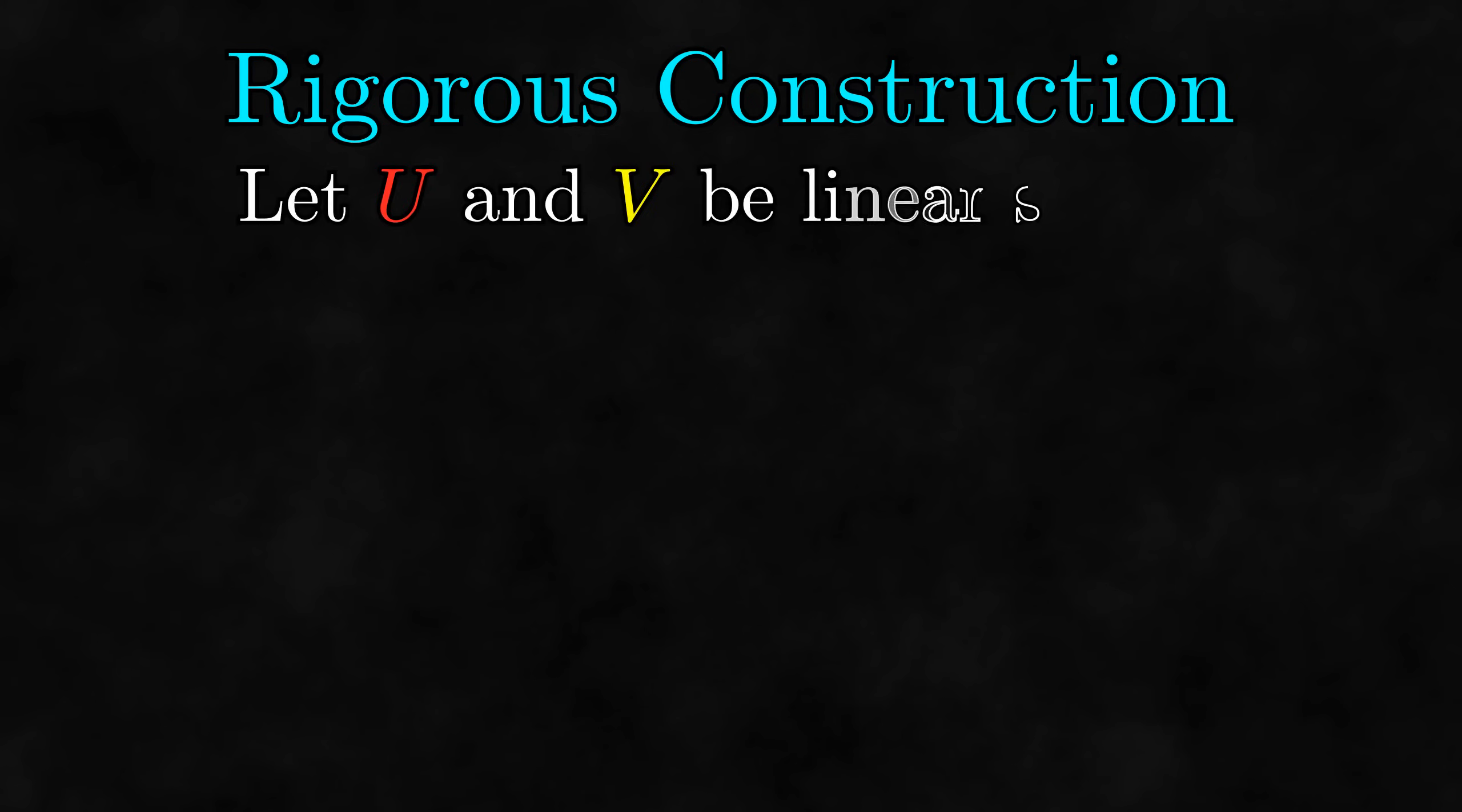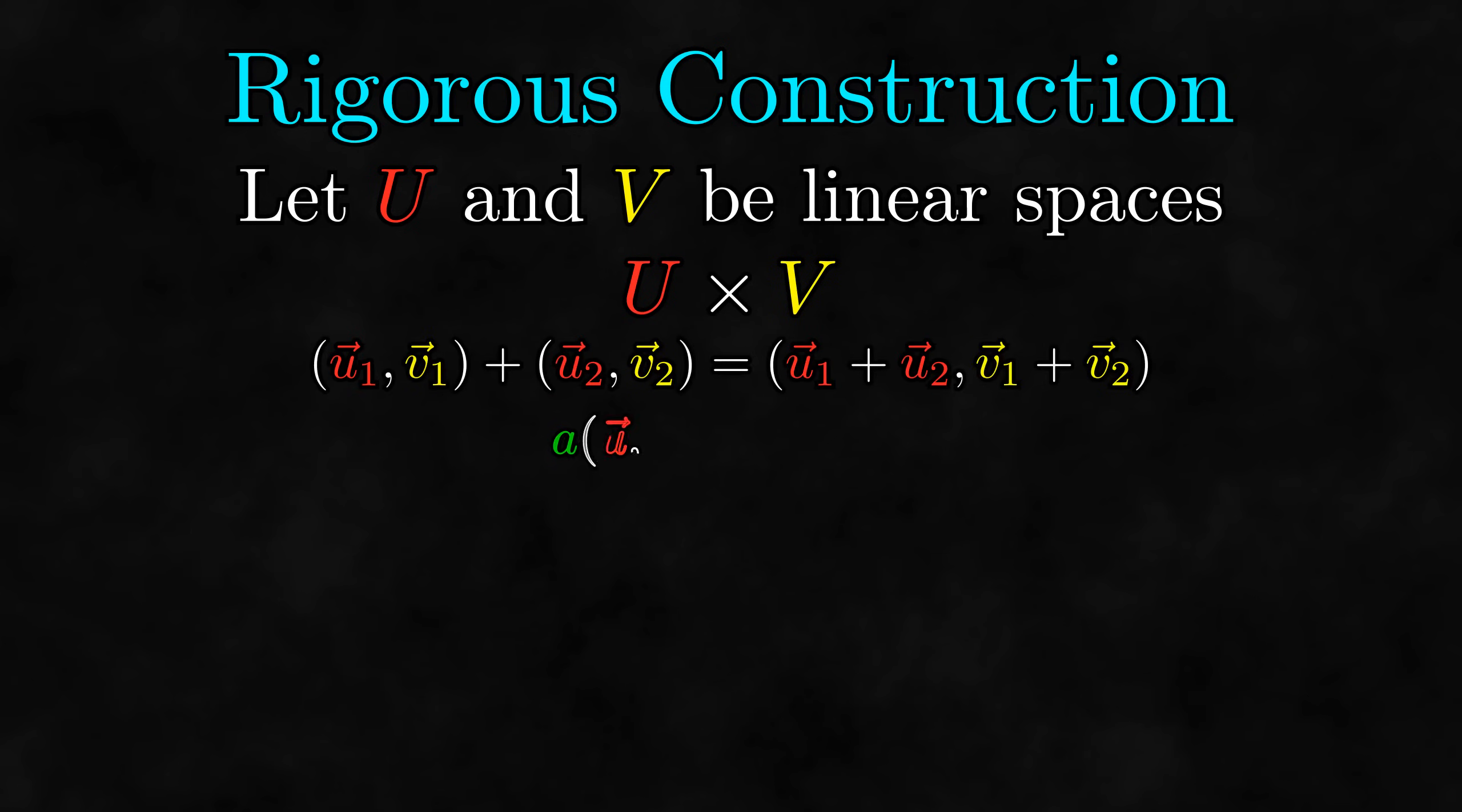Anyway, let U and V be linear spaces. We can take the Cartesian product of U and V and turn it into a linear space, where the sum of two pairs is the sum of the components, multiplying by a scalar is done by multiplying the components, the zero vector is the pair of zeros, and negatives are found by negating the components. You can verify that under these operations, this Cartesian product forms a linear space, and this is what we call the direct sum of U and V.